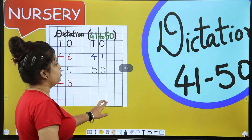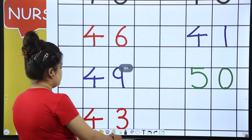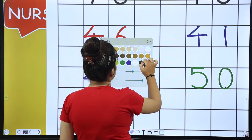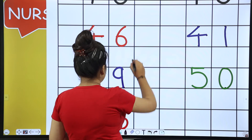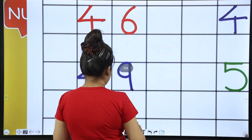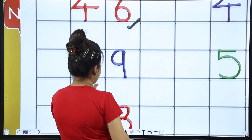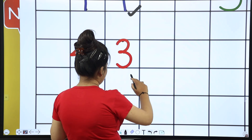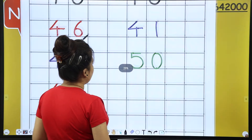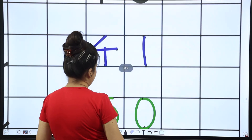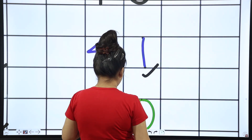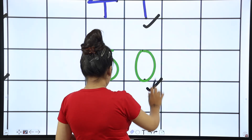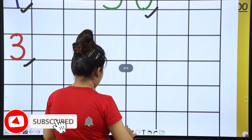Dictation from 41 to 50 is complete. Now it's time to check — let's get ready to check. 46 — check. 49 — check. 43 — check. 50 — check. And a very cute smiley for my cute little babies!